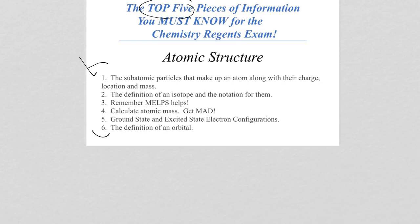For number one, you need to know, of course, the particles that make up an atom. They are protons, neutrons, and electrons. Not only that, you need to know their charge. Protons are positive. Neutrons have no charge. Electrons are negative.